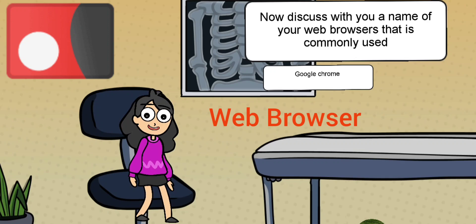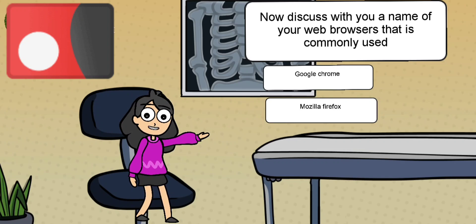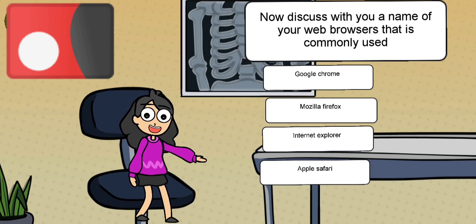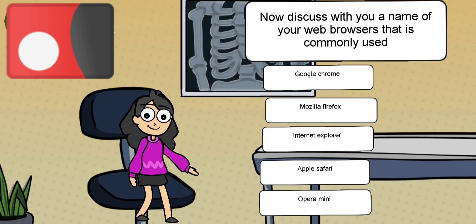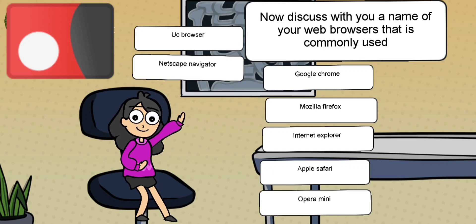Now I will discuss with you the names of web browsers that are commonly used. The first is Google Chrome. The second is Mozilla Firefox. The third is Internet Explorer. The fourth one is Apple Safari. The fifth one is Opera Mini. The sixth one is UC Browser. The last one is Netscape Navigator, etc.